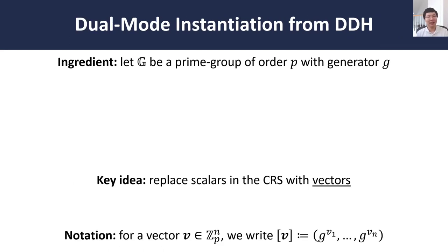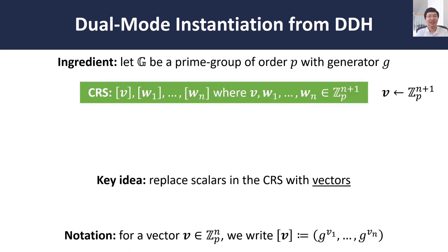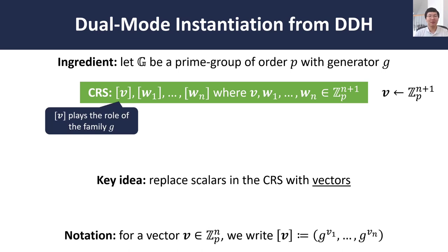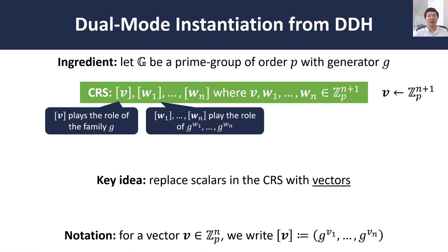The key idea in our work is instead of using scalars in the common reference string, we are going to replace them with vectors. So as notation, whenever we have a vector v, I will write [v] to denote a vector of group elements where each group element is obtained by taking g raised to the corresponding component of the vector. So in our construction, the common reference string will consist of a collection of encoded vectors of dimension n+1. We start by sampling a random vector v, and the encoding of v will play the role of the generator g in the basic CDH construction. Then we have a collection of encoded vectors w₁ up to wₙ, which will play the role of the h's.